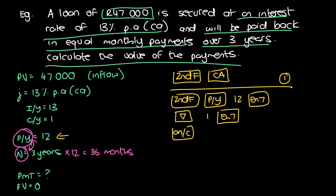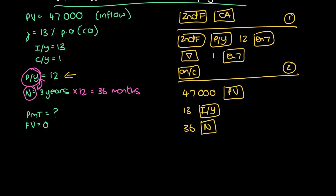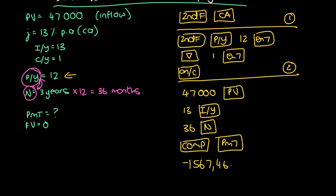Clear the screen to get ready for inputting the rest of the information. Stage two is always inputting your payment periods and compounding periods. Now input everything else we know: 47,000 PV, 13 IY, and 36 N — remembering that N must be in the same units as your payment periods. Then compute PMT. If you cleared correctly, the default FV is zero anyway. The screen will display minus 1567.46, meaning the monthly payments are 1,567 rand and 46 cents.